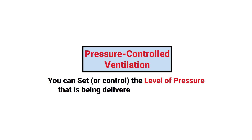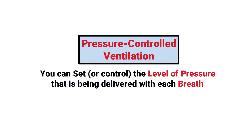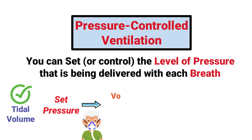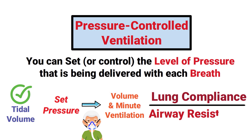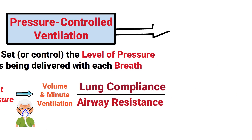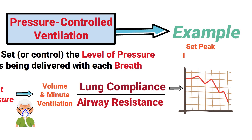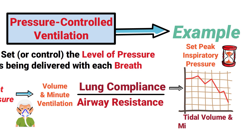Pressure controlled ventilation means that you can set or control the level of pressure being delivered with each breath in order to achieve a desired tidal volume. With a set pressure, the patient's volume and minute ventilation can vary depending on their lung compliance and airway resistance. For example, if the patient's lung compliance were to decrease, the set peak inspiratory pressure would terminate early, causing the tidal volume and minute ventilation to decrease.